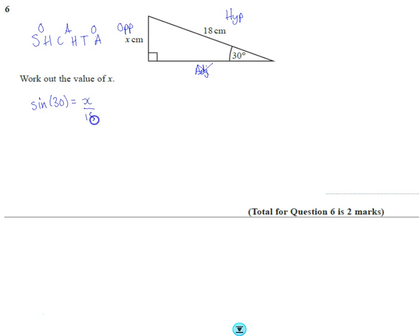To rearrange, I multiply by 18 and get 18 sine of 30.